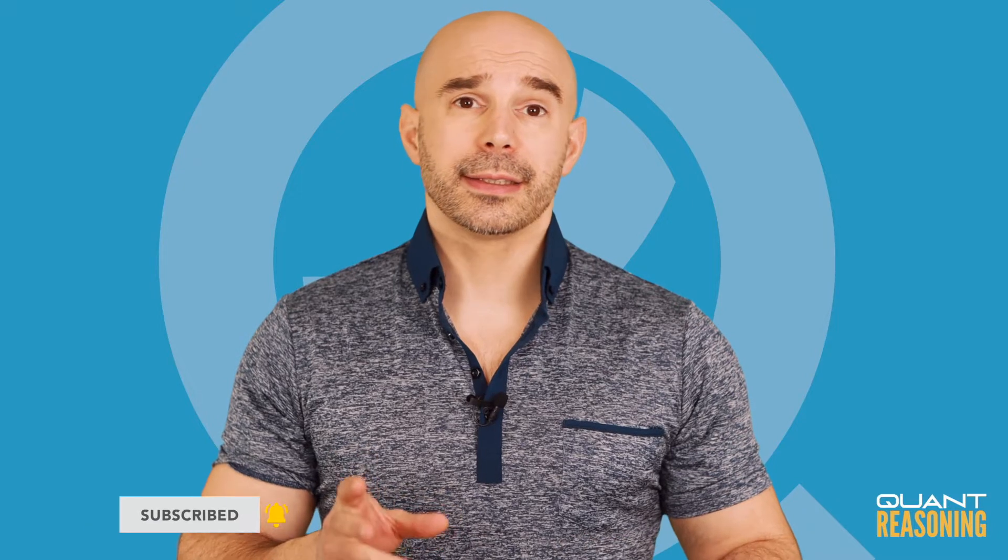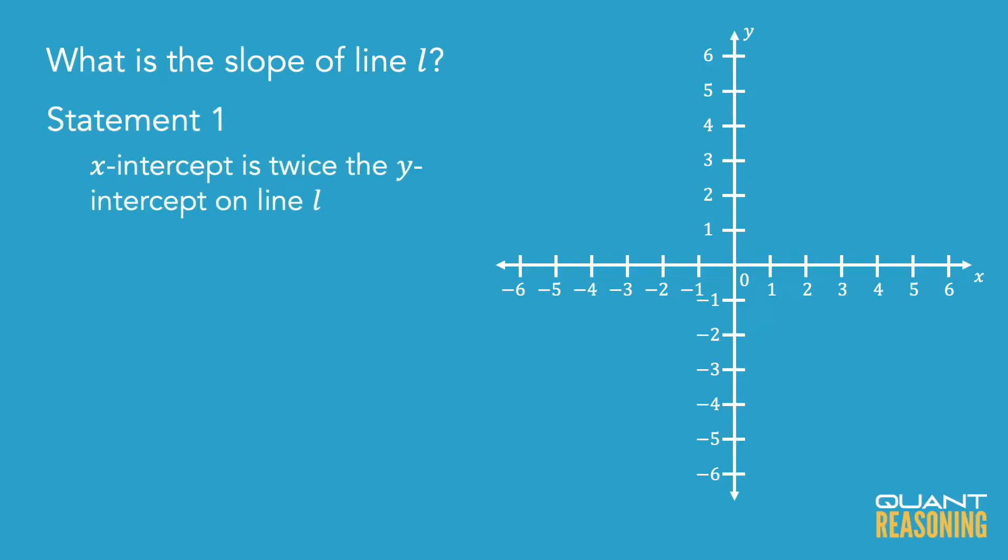Now, at first glance, statement 1 may seem insufficient. And I'll spare you the algebraic solution because you can find it easily by Googling. I want to show you a way to visualize in your head or on your scratchpad what it means when the x-intercept is twice the y-intercept.